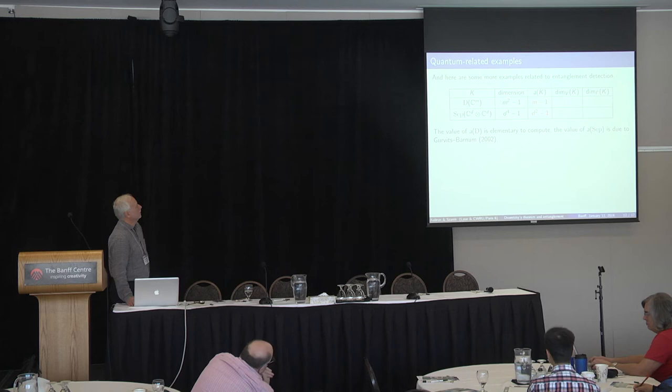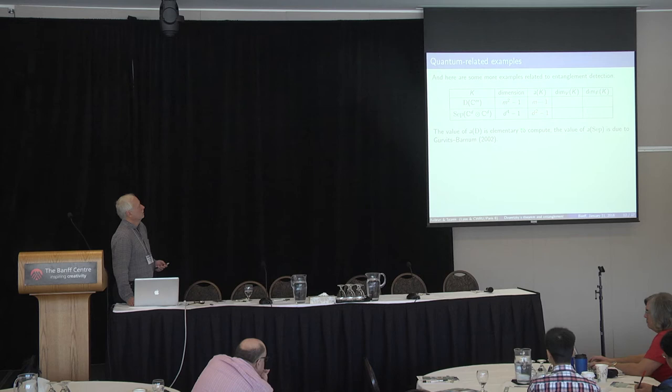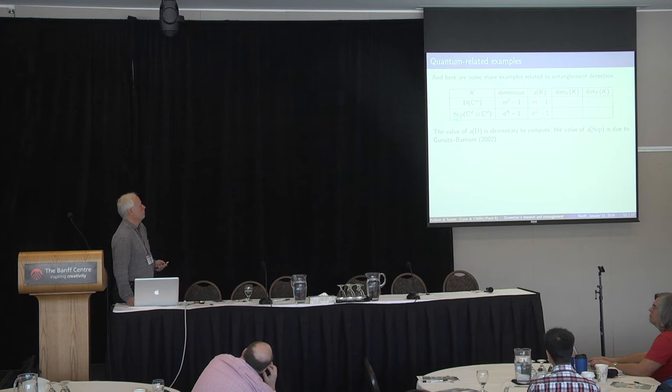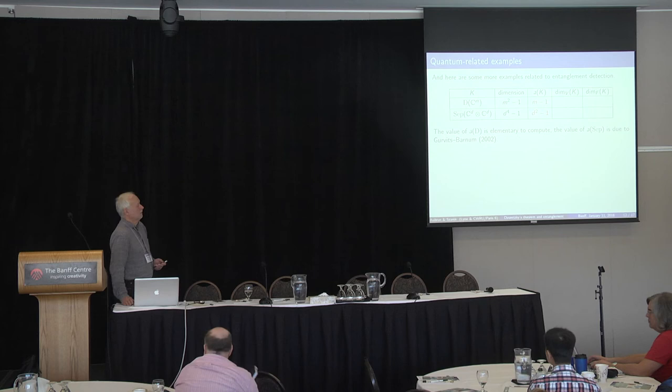Now examples related to entanglement detection. First, the asphericity is elementary to calculate for the set of all states. Then there is the observation due to Gurvits and Barnum which says that the in-radius of SEP in the bipartite case is the same as the in-radius of the set of all states — this is not trivial, but well-known and not too complicated.